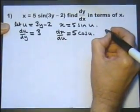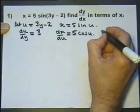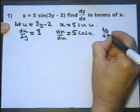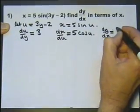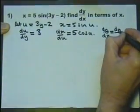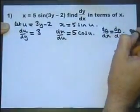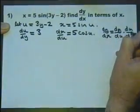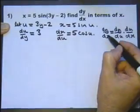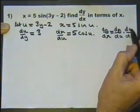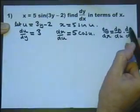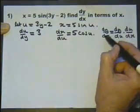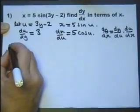Now we actually want dy/dx. So that's going to involve the chain rule: dy/dx equals dy/du times du/dx. That's what we're going to use to get our dy/dx.